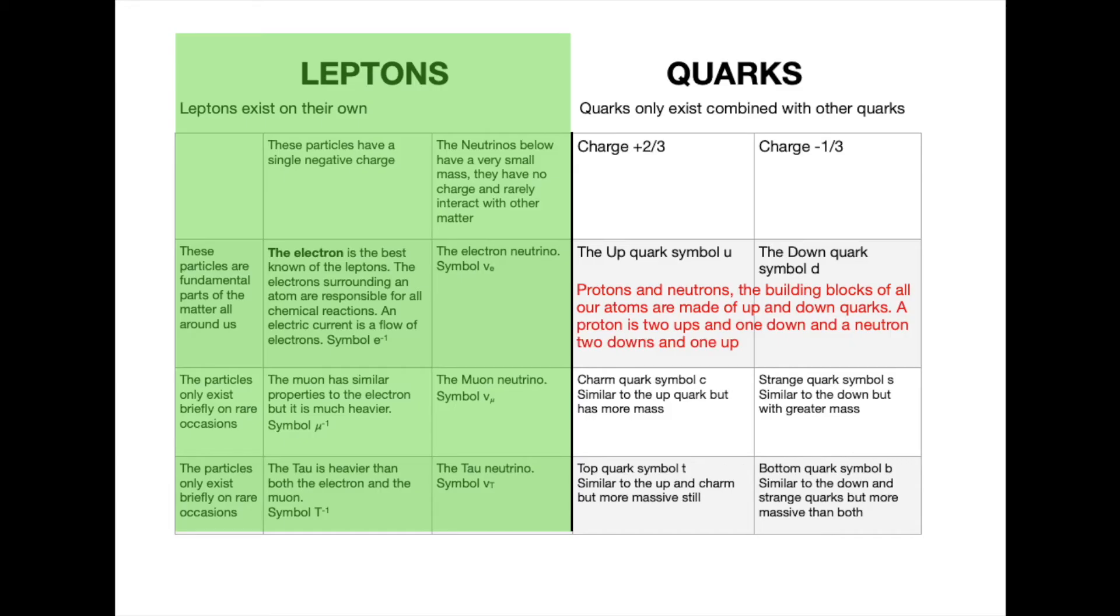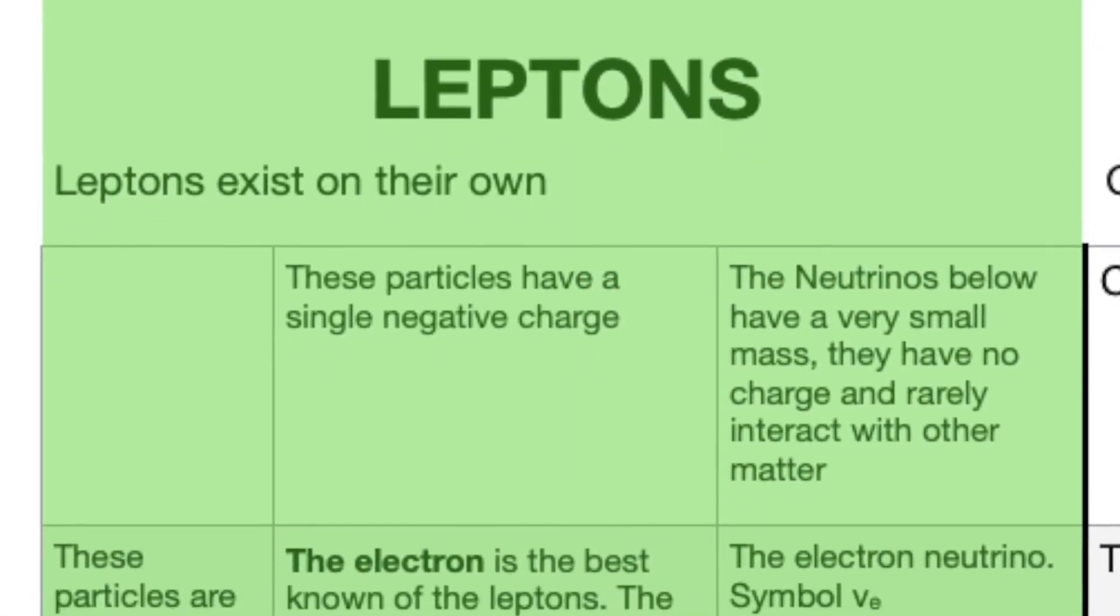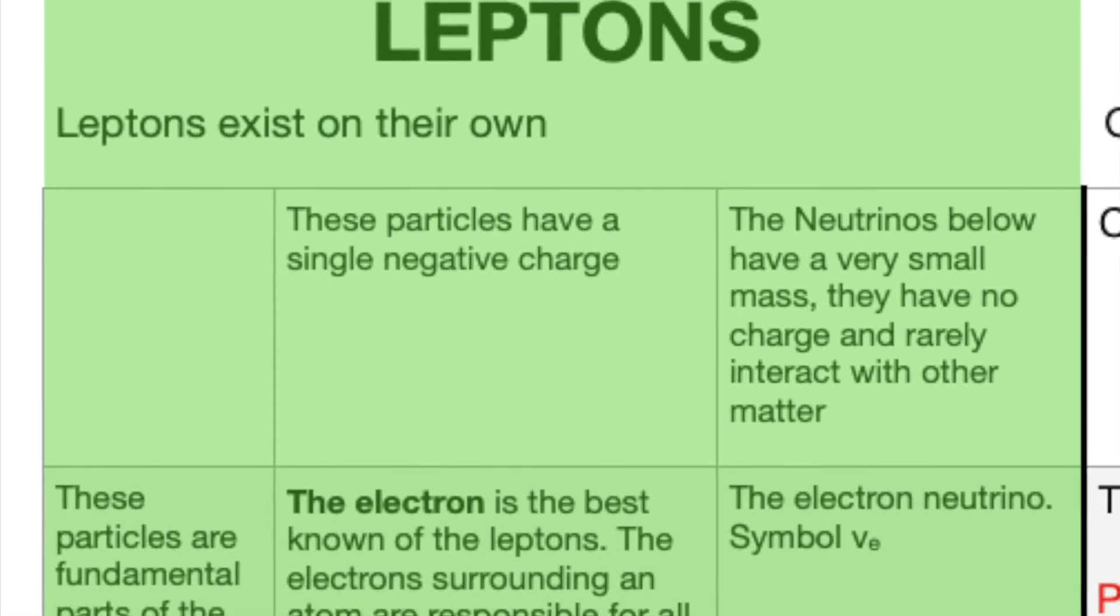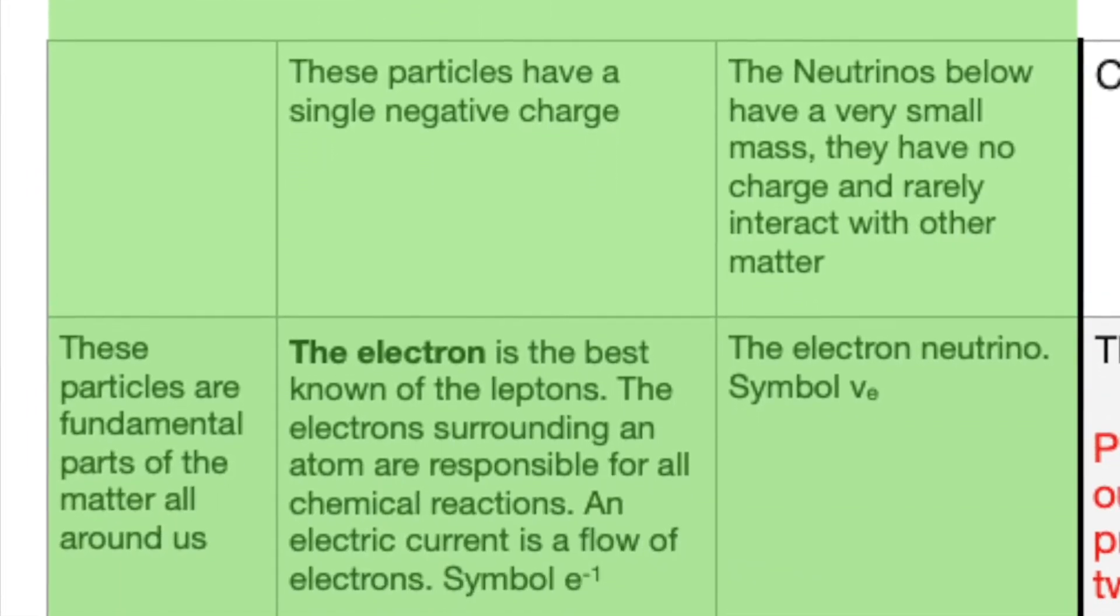So quickly summarizing what I've said about leptons: all leptons can exist independently. The main named leptons have a negative charge. The neutrinos have zero charge and rarely interact with anything else.